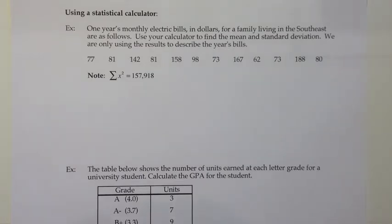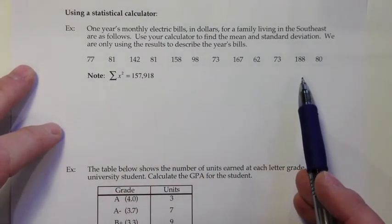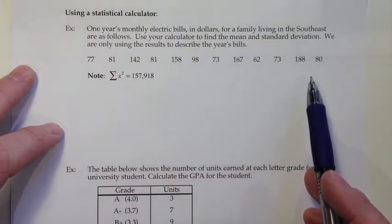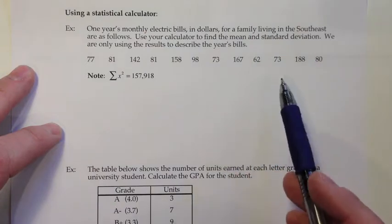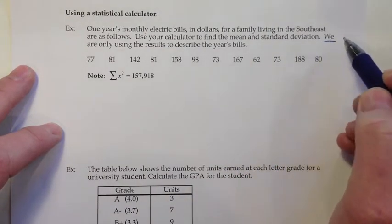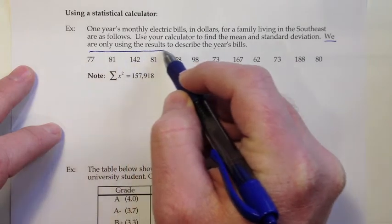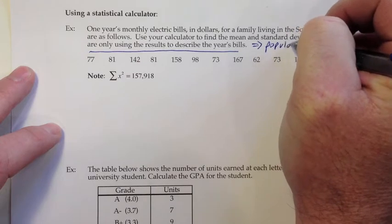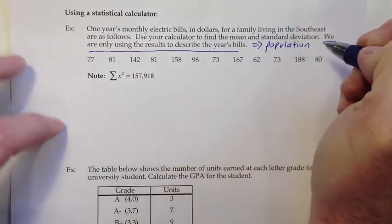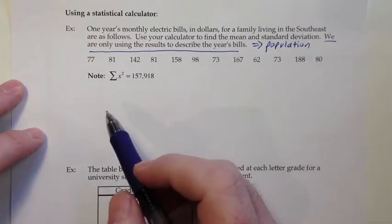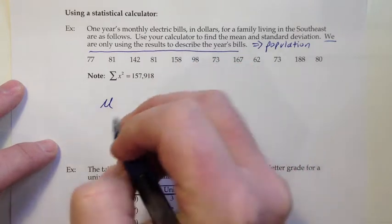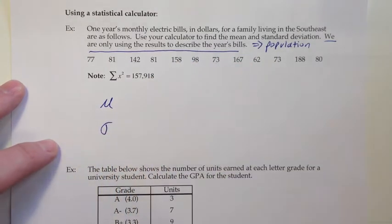We are only using the results to describe the year's bills. So we have all 12 months of the year and they're only trying to describe the year's bills. So this is not a sample. We have our entire data set of interest. So I would say this is a population. So I think that's worth noting before we even get to any of the calculator stuff. This line right here implies that what we're working with is a population. And that means that when they ask us to find the mean and standard deviation, they're asking us to find the population mean mu and the population standard deviation sigma.